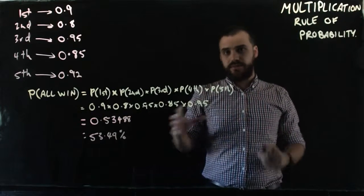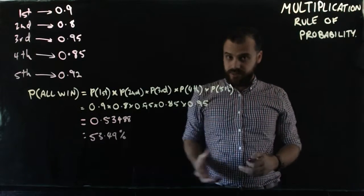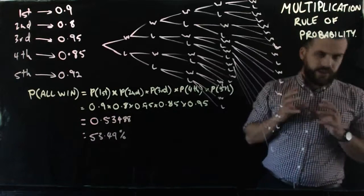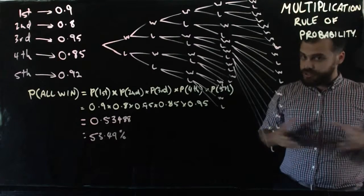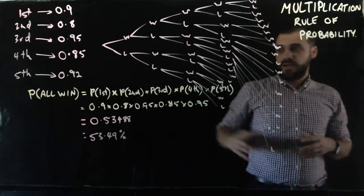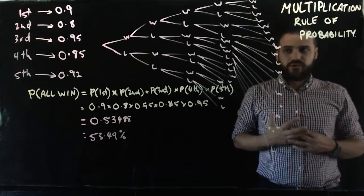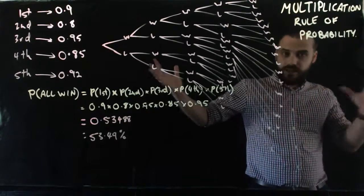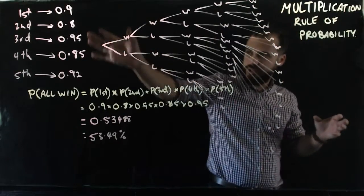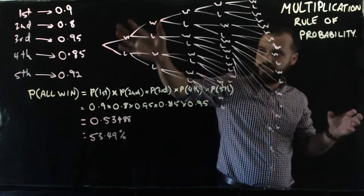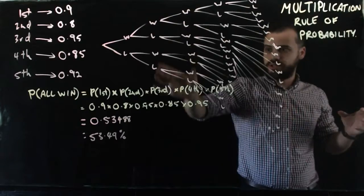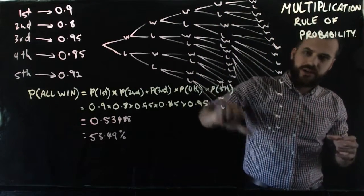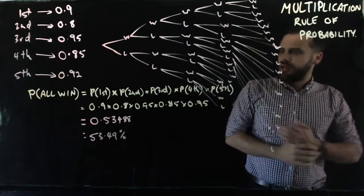Interestingly, this entire thing can be represented in a simplified tree diagram. I called it simplified, but you can see that once you start getting past three or four trials, things really start getting away from you. Firsts either win or lose, seconds either win or lose, thirds either win or lose, fourths either win or lose, fifths either win or lose. There should be some more arrows down here, but I got sick of it.